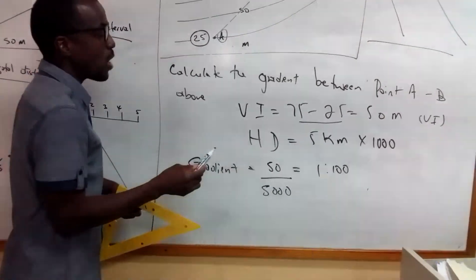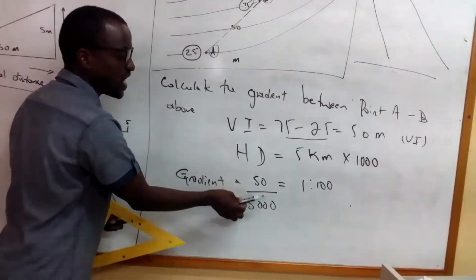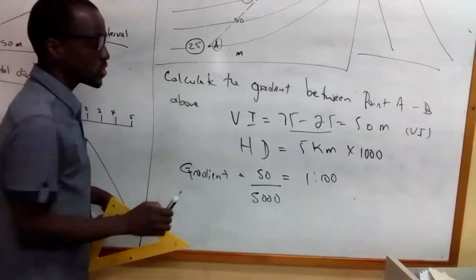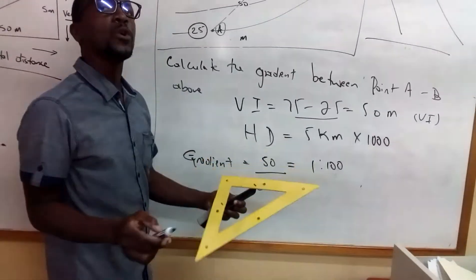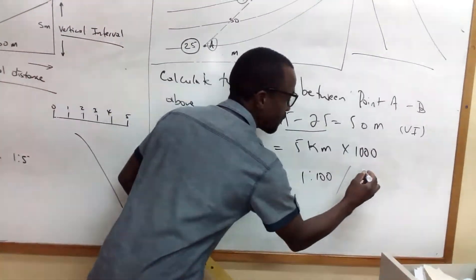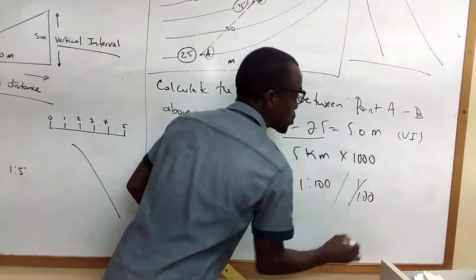So in working it out, I will end up with 50 into five thousand gives you a ratio of one to one hundred. Or if you want, you can have a fraction as one to one hundred.